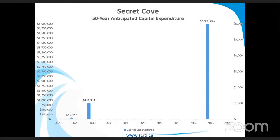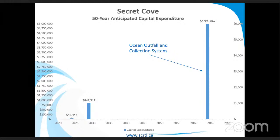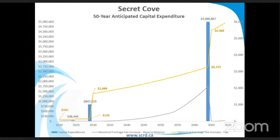If we back that window out to a 50-year window, we see a pretty large cost coming up. This is an ocean outfall — it's the collection system for the Secret Cove wastewater service area. I believe that ocean outfall cost is anticipated to be shared with Jolly Roger. If we go along the historical rates, continuing at a 2% increase, we still see a large jump in anticipated fees coming up in 2065. These sort of jumps are considered inequitable to future rate payers as they bear the majority of the costs in the debt.